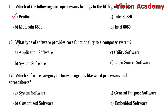Question number 16: What type of software provides core functionality to a computer system? Option A: application software. Option B: system software. Option C: utility software. Option D: open source software. The right answer is system software.